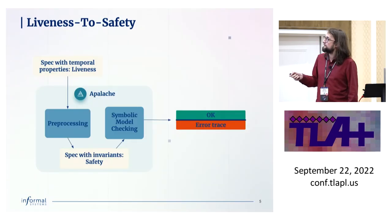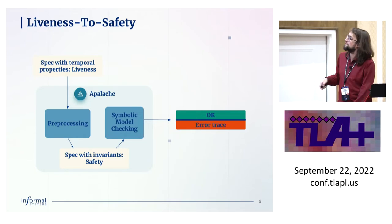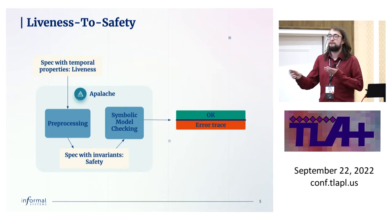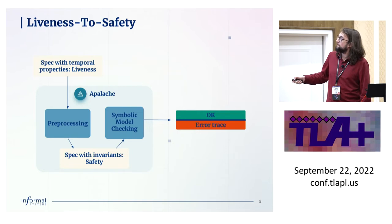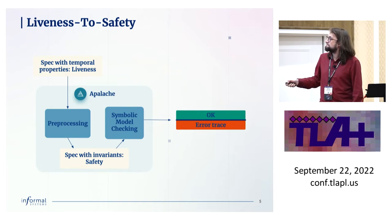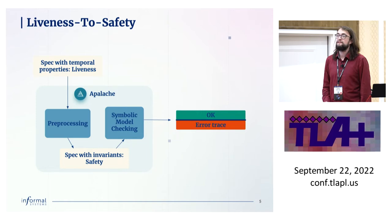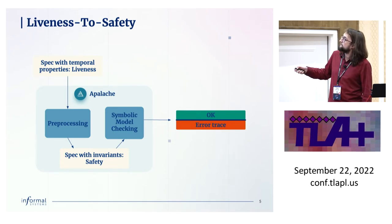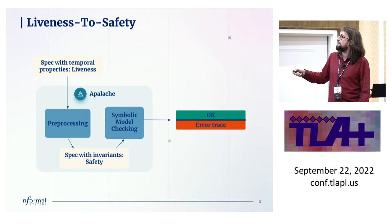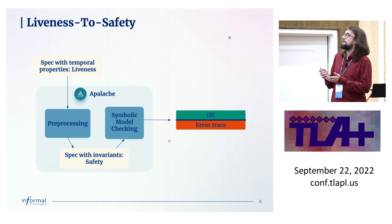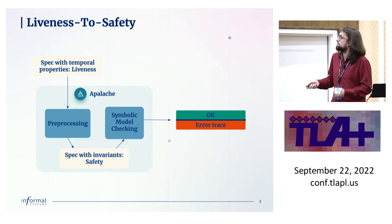Here's a broad overview of this talk: I'll show how to transform liveness properties into safety properties. In Apalache, it's implemented as follows — you get a spec with some temporal properties using globally and eventually operators, put it into Apalache, which performs preprocessing and gives you a spec with invariants that no longer has temporal operators — just safety. Then you model check this and get a result telling you whether your original spec satisfied your temporal property. This allows us to talk about liveness by just solving safety problems.